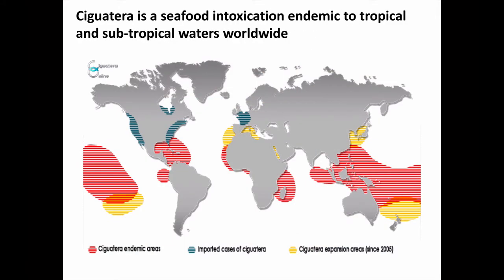Now we're moving on to ciguatera poisoning, which is a seafood intoxication syndrome endemic to tropical and subtropical waters worldwide. Ciguatera poisoning is much more common than tetrodotoxin poisoning, and is believed to affect tens of thousands of people annually, but it's not widespread in the United States. In the U.S., cases are most likely to occur around Hawaii, the Gulf of Mexico, and the Caribbean Sea. This map also shows areas with bluish stripes representing imported cases of ciguatera — these are really people who traveled to the tropics, ate bad fish, and then were diagnosed and/or treated for ciguatera on their return home to Europe and North America. The tropical reef ecosystem and microorganisms necessary to produce ciguatera simply are not found in these cooler climates.